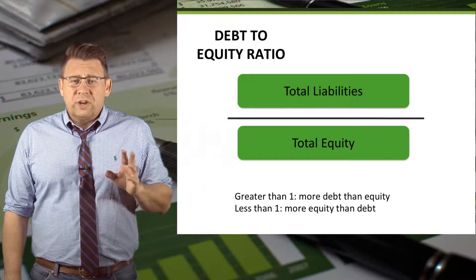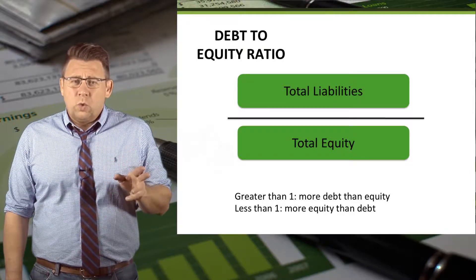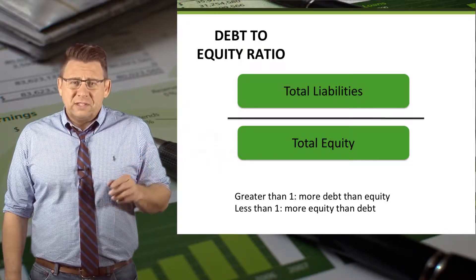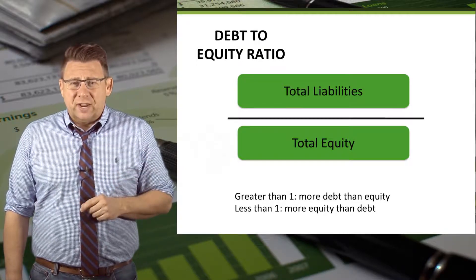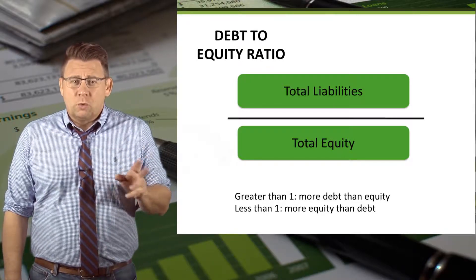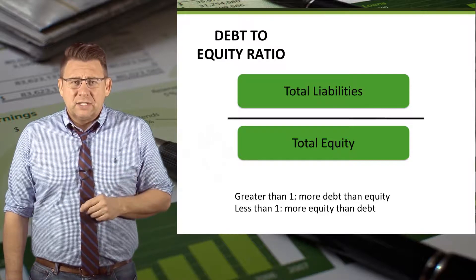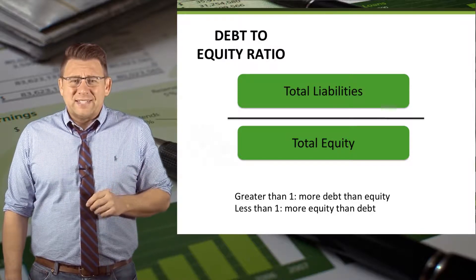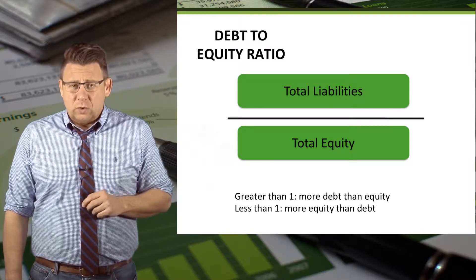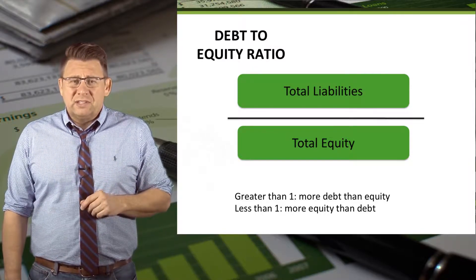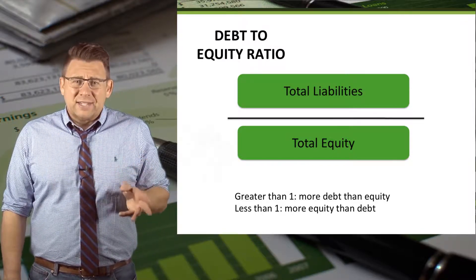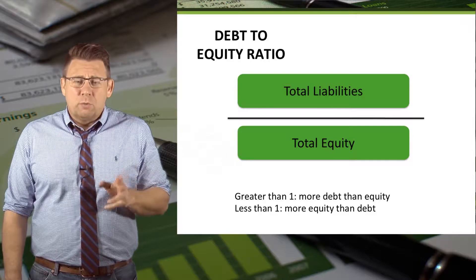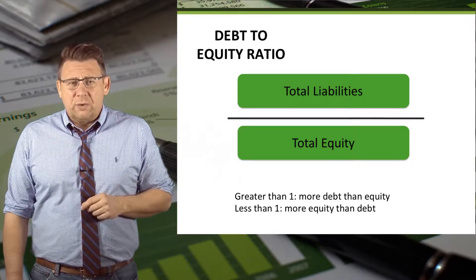When this ratio is greater than 1, it means that the assets are financed more with debt. When this ratio is less than 1, it means the assets are financed more with equity.